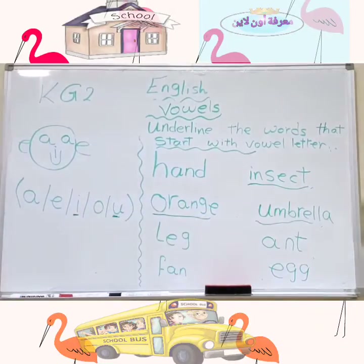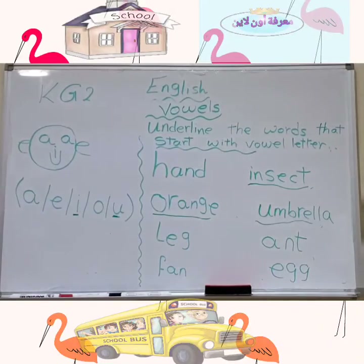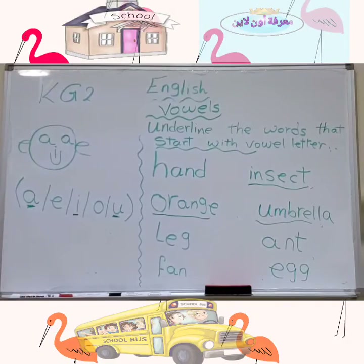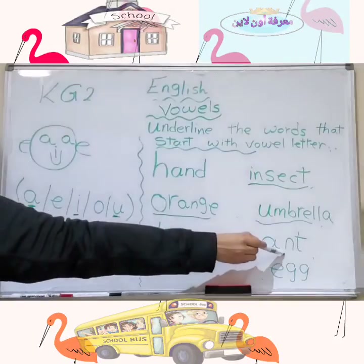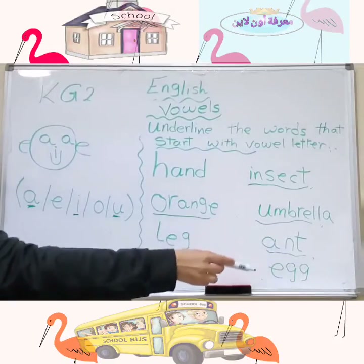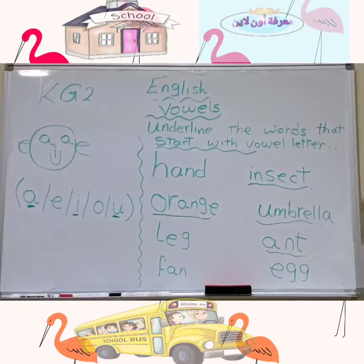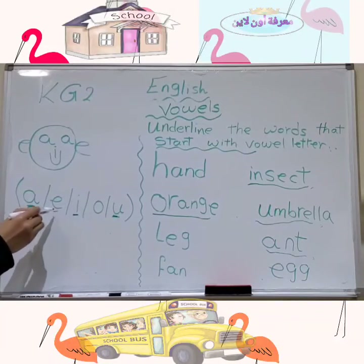'And' starts with the letter A. A is a vowel — yes! So we will underline it. 'Egg' starts with the letter E, which is a vowel — yes! So we will underline it.